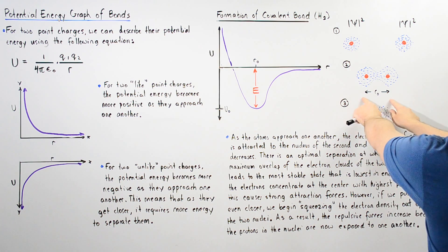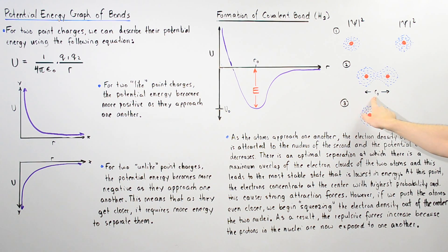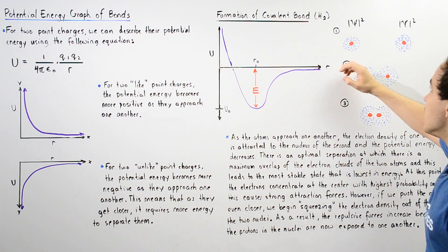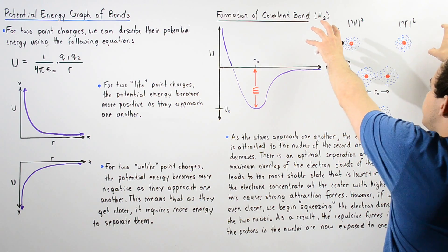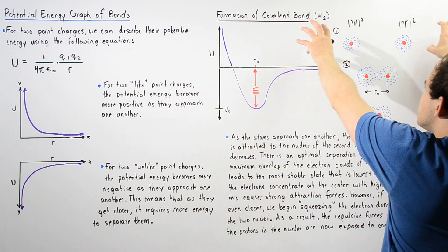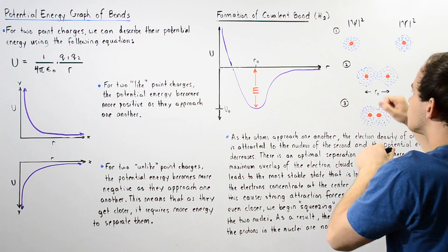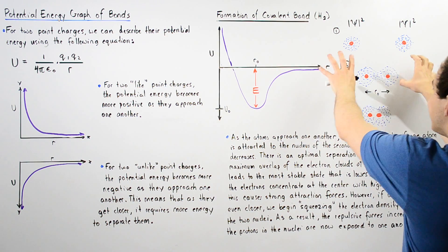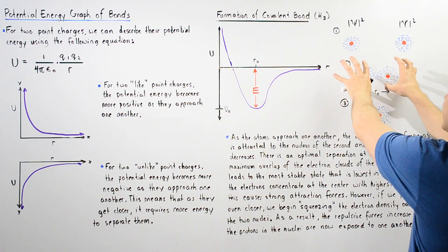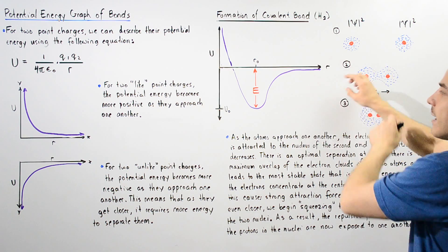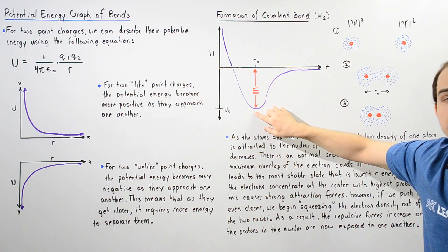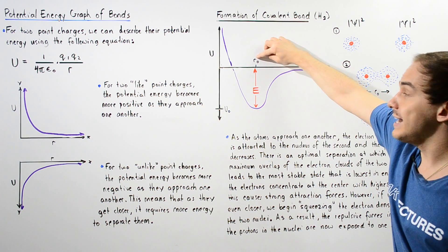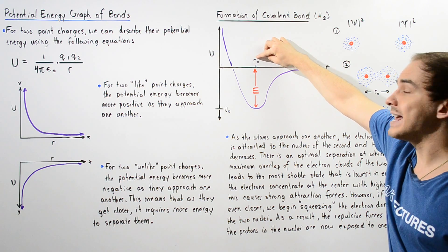This is our distance given by R-naught within the following diagram. As our two individual atoms begin to approach one another, their energy begins to decrease, and as the electron clouds begin to overlap, eventually we reach a point at which our radius is given by R-naught.